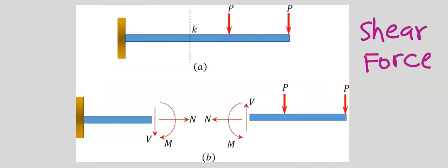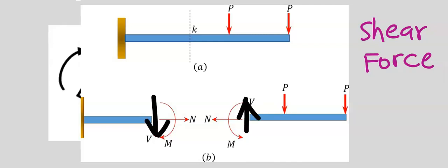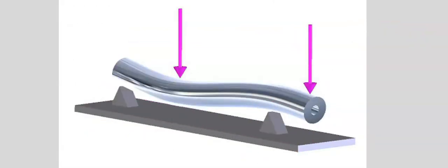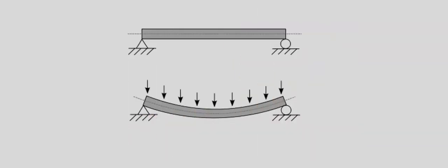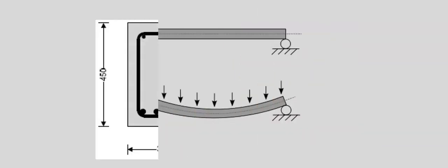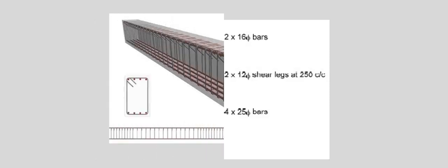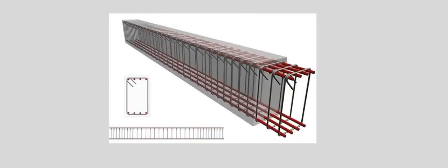Loads can also cause a beam to experience shear force and bending. To avoid structural failure during design — for example, in reinforced concrete design — steel and concrete are put together to resist compressive and tensile stresses.